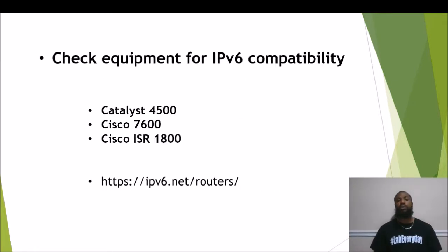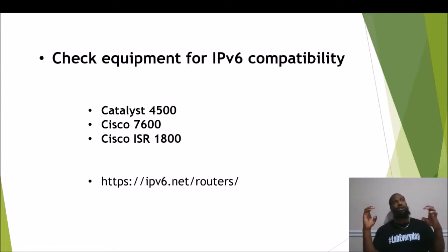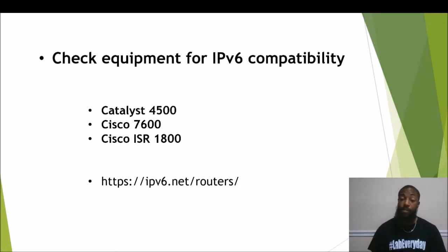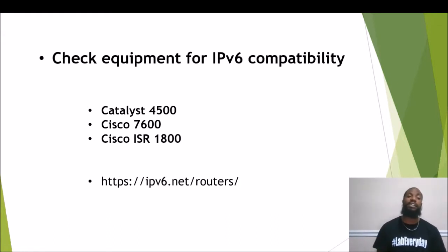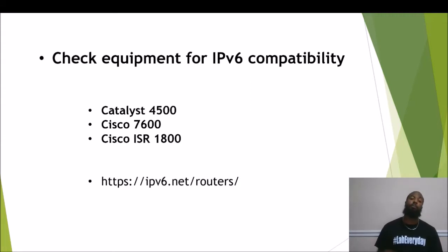Cisco router families like the Catalyst 4500, 7600 series, and ISR 1800 — including the 1841 — are IPv6 compatible. Nine times out of ten, if you get new Cisco equipment it will be IPv6 compatible, but you definitely want to double-check. You can visit IPv6.net/routers to see which SOHO routers are compatible.